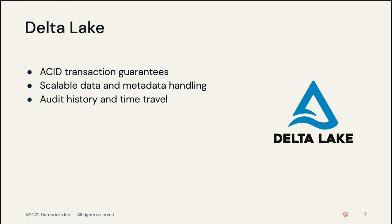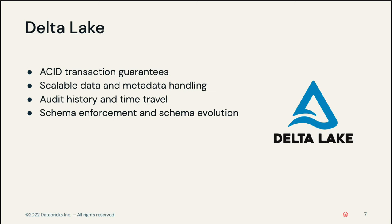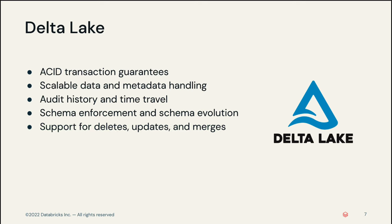Delta Lake provides audit history and time travel by providing a transaction log with details about every change to data, offering a full audit trail, including the ability to revert to earlier versions for rollbacks or to reproduce experiments. It also provides schema enforcement and schema evolution, preventing the insertion of data with the wrong schema while allowing table schema to be safely changed. Additionally, it supports deletes, updates, and merges — which is rare for a distributed processing framework — accommodating complex use cases such as change data capture, slowly changing dimension operations, and streaming upserts.